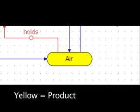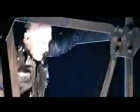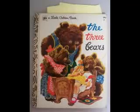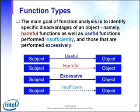The yellow ellipse is the product — that's the special type of supersystem element the system was designed to work on. And remember, there can be only one. We define the interactions between these components as either useful or harmful functions, and we can use our Goldilocks analogy to define those useful functions as excessive, nominal, or insufficient. And the notation looks like this.